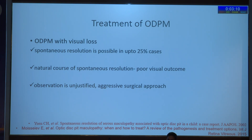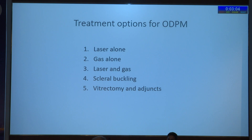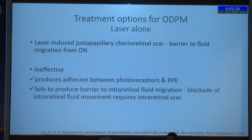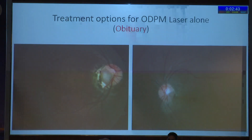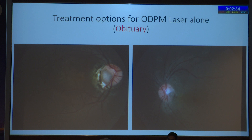When maculopathy is present, observation is not justified and a very aggressive surgical approach is required. The first treatment option is laser alone, which induces a juxtapapillary chorioretinal scar, acting as a barrier for fluid to migrate from the optic nerve into the macular area. However, it is quite ineffective. Cases that had laser done long ago look nice but the macula has totally degenerated. For OD pit, laser alone should be written off as an option.